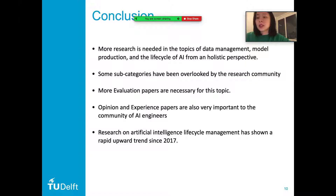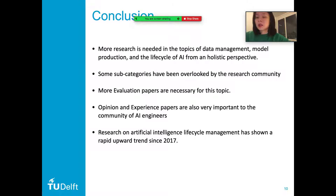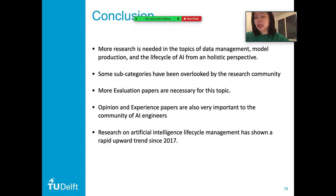There are only 46 papers taking a holistic perspective so far. On the other hand, there are too many problems to be solved in each particular stage. Our study also showed that some subcategories have been overlooked by the research community — for example, data traceability or quality assessments. In terms of research type, a considerable proportion of publications are solution papers, but the nature of lifecycle management problems is mostly about how to manage AI projects in practice in a real setting. Thus, we argue that more evaluation papers are necessary.